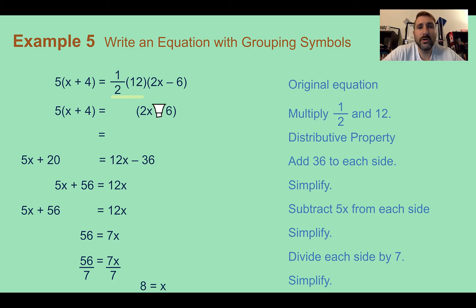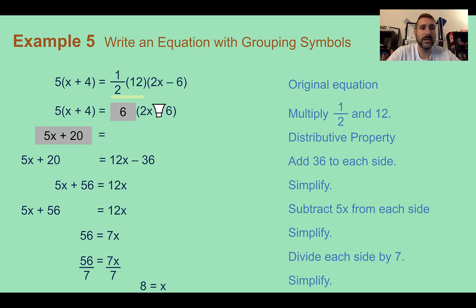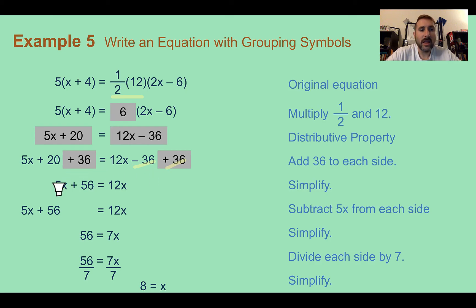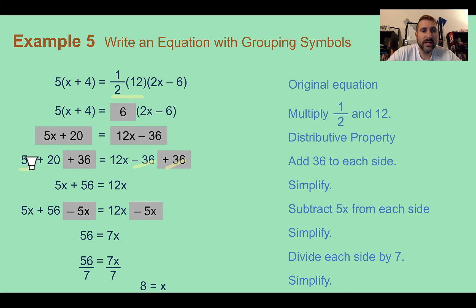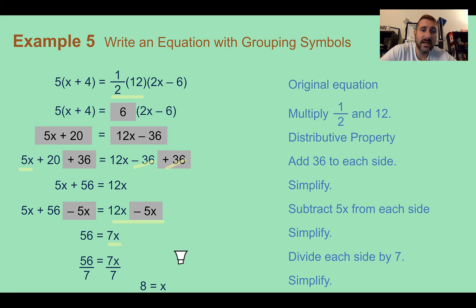Let's solve to find when they're equal. First, combine the two constants: one-half of 12 is 6. Now use the distributive property: on the left, 5x plus 20; on the right, 12x minus 36. Going through and solving for the variable, we add 36 first, getting 56, then subtract 5x, so 56 equals 7x. Dividing by 7, x equals 8. It's easier to subtract the 5x from the left so that when you do 12x minus 5x you get a positive variable, but you could subtract 12x and get the same answer either way.